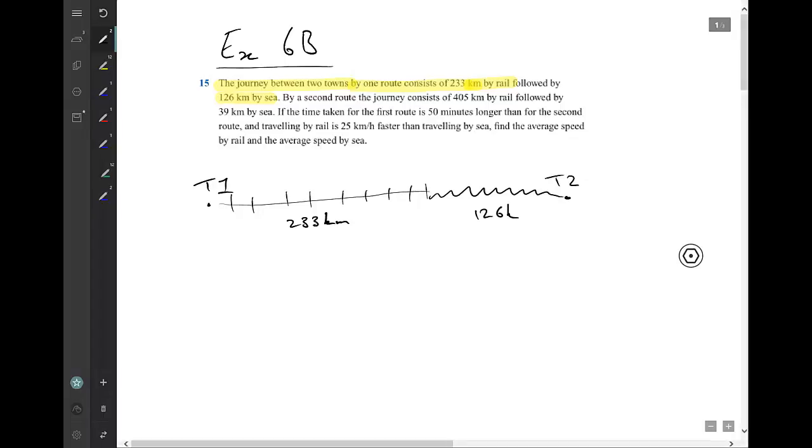And I'm also told there's a second route, which is 405 by rail and 39 by sea. So I'm going to draw that with a different color pen. So not the greatest railway you've ever seen, but hopefully that's clear. And then this last bit by sea. So in this case, 405 kilometers and 39 kilometers.